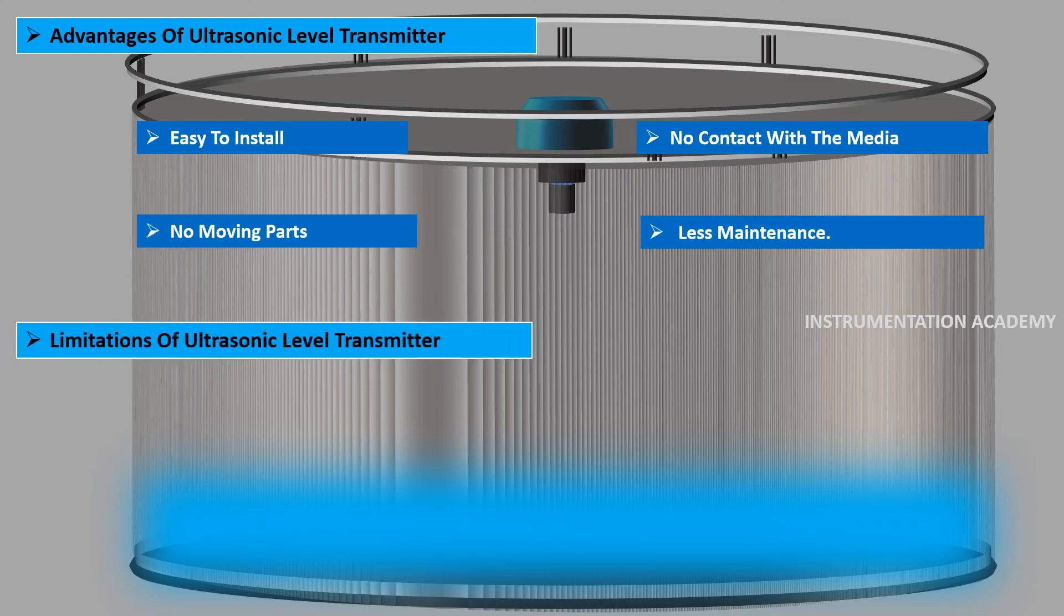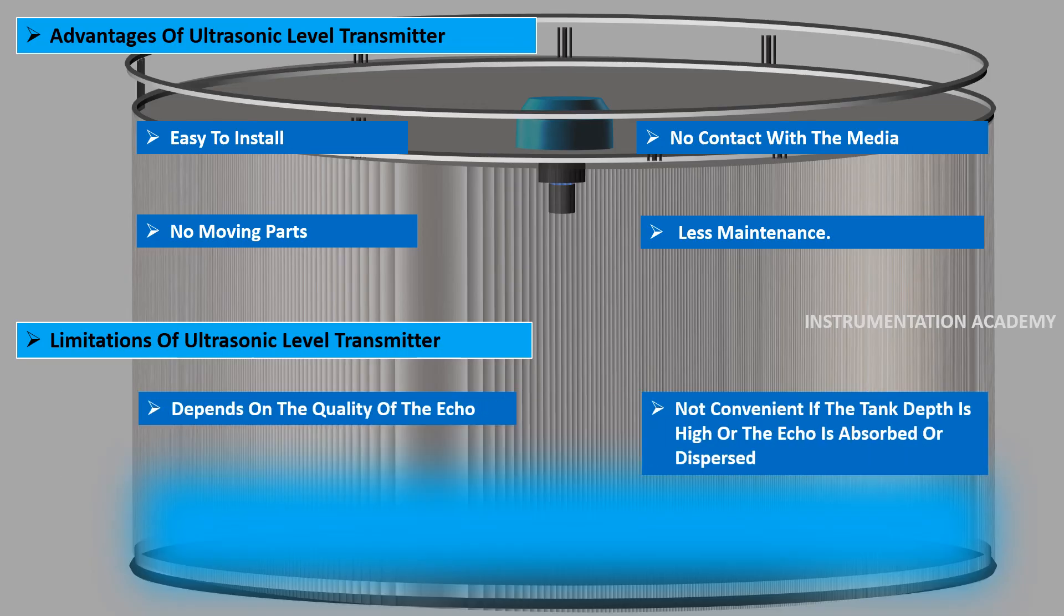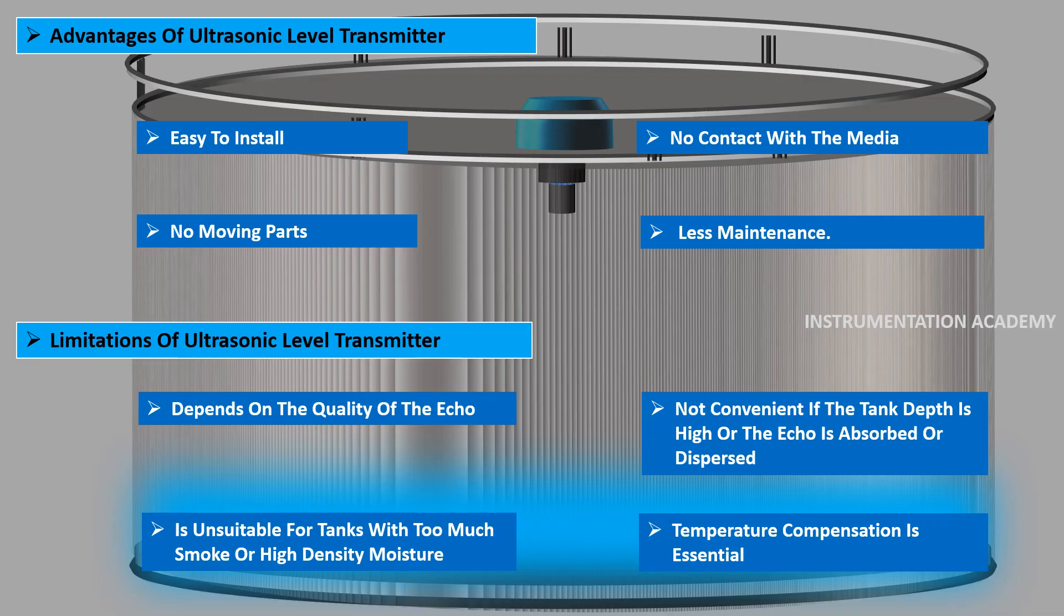Limitations of ultrasonic level transmitter: Accuracy depends on the quality of the echo received by the transducer. It is not so convenient if the tank depth is high or the echo is absorbed or dispersed. It is unsuitable for tanks with too much smoke or high density moisture. Changes in process temperature will change the speed of ultrasonic wave through the space above the liquid, so temperature compensation is essential.